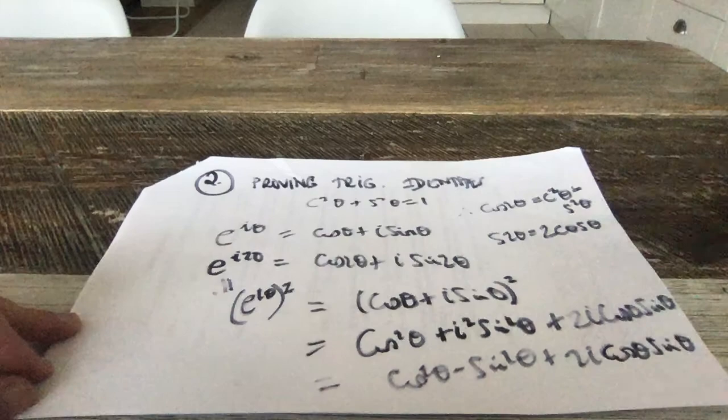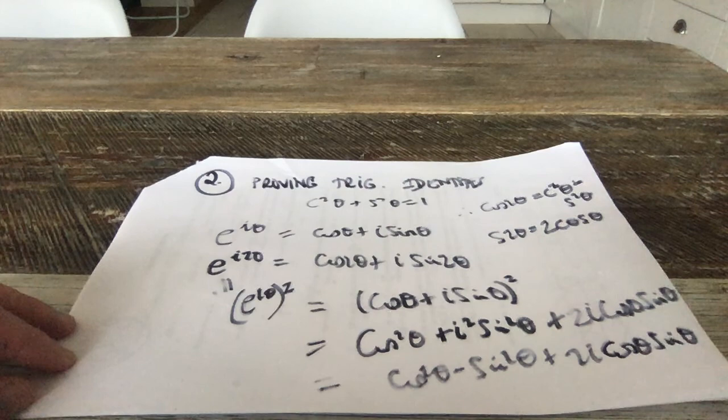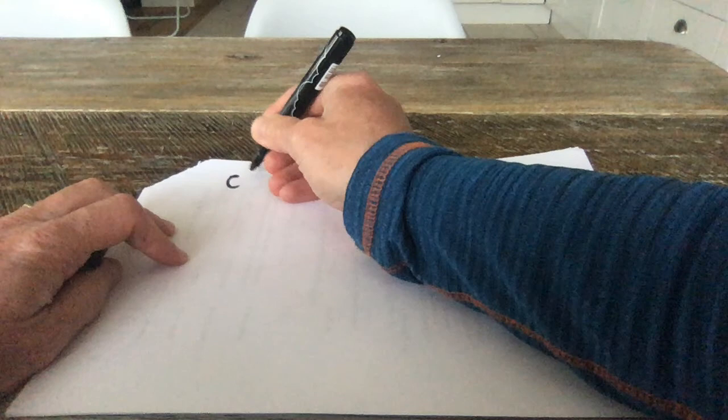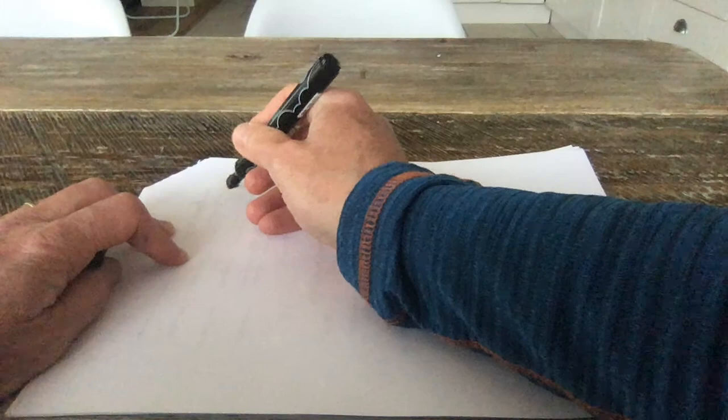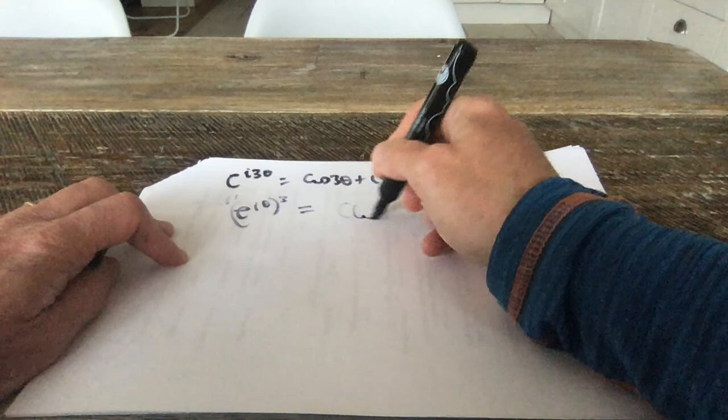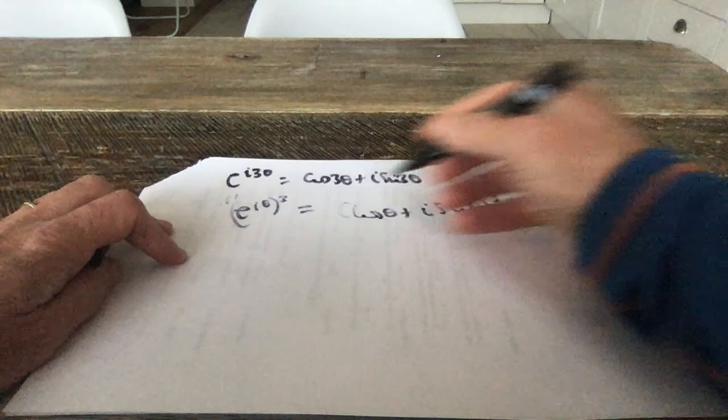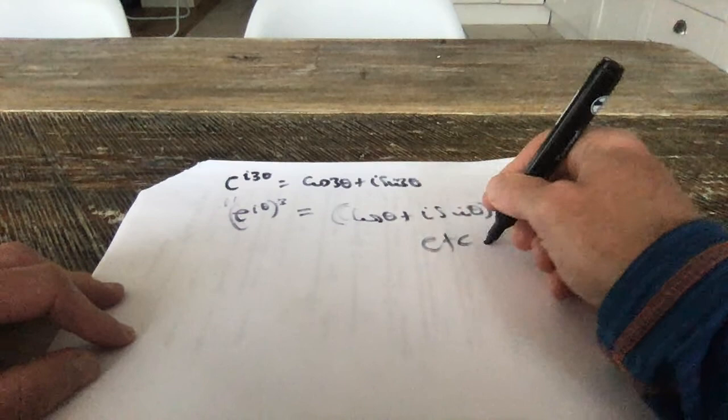You can extend this to e^(i·3θ) and e^(i·4θ) as well. So e^(i·3θ) equals cos 3θ plus i sin 3θ on the right, and on the left you get (e^(iθ))³ which is (cos θ + i sin θ)³. You multiply that out to get identities for cos 3θ and sin 3θ. The most important ones you'll see most often are the cos 2θ and sin 2θ identities.